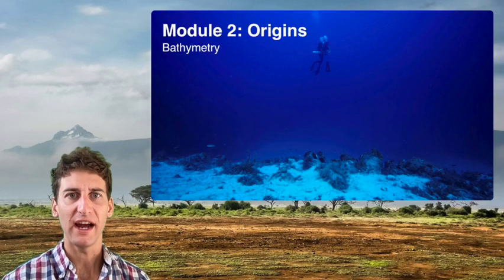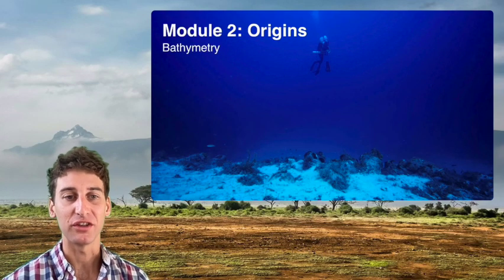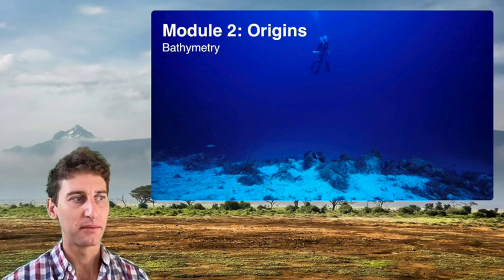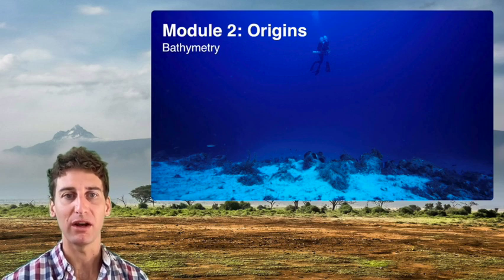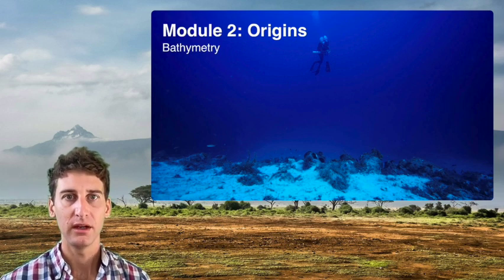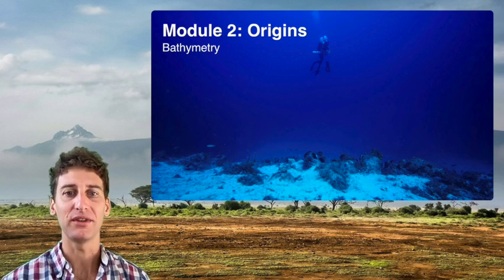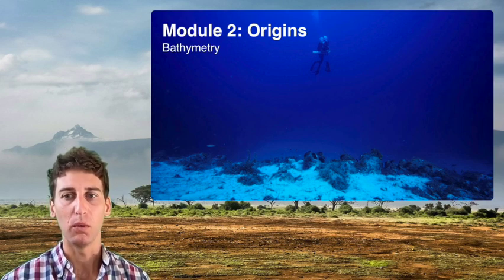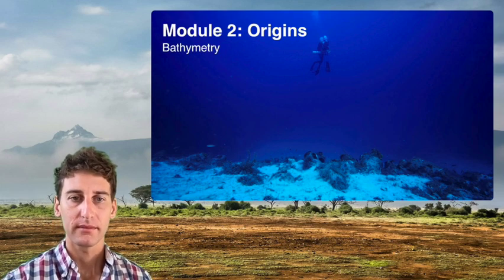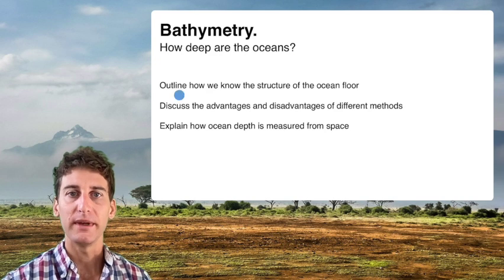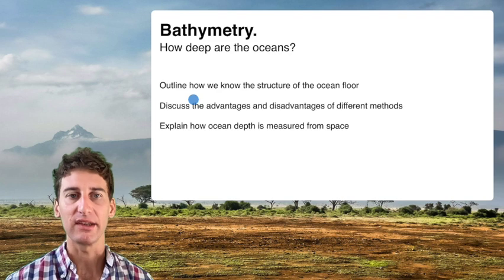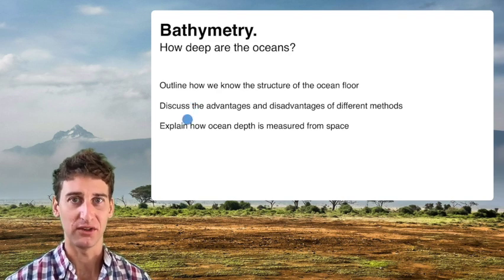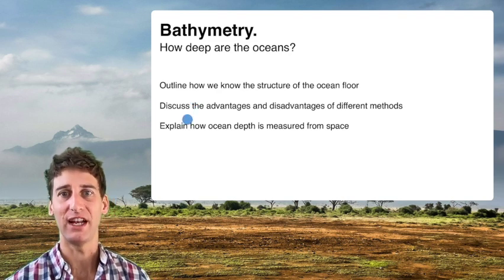In this video, we're going to look into how the ocean depths were measured. This comes off the heels of ideas for continental drift, which have very specific predictions about what's on the ocean floor. The revolution of bathymetric technologies is really a way to investigate how the continents could be splitting apart. We'll outline how we know the structure of the ocean floor and the different techniques that came along to measure ocean depths, including their advantages and disadvantages.